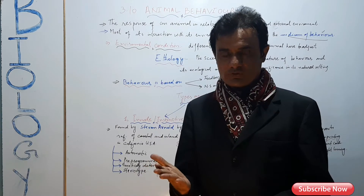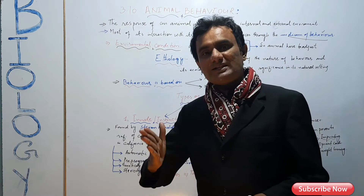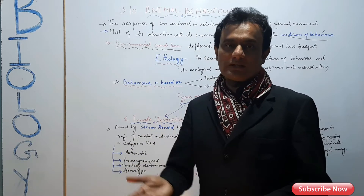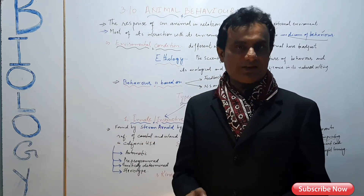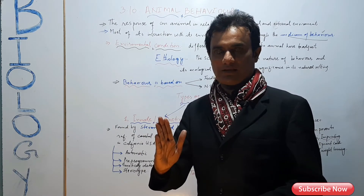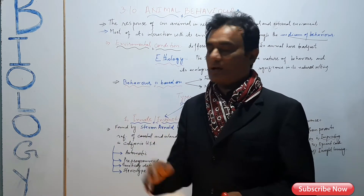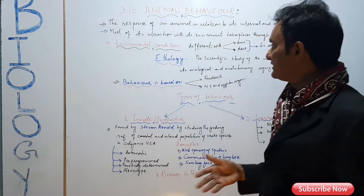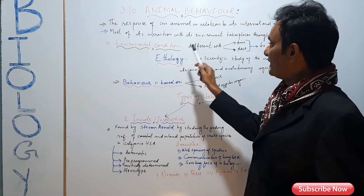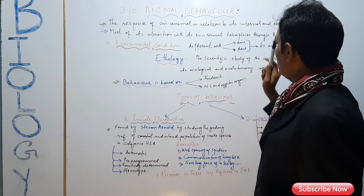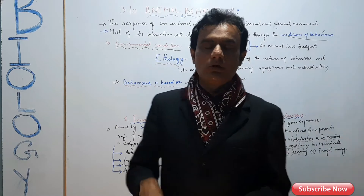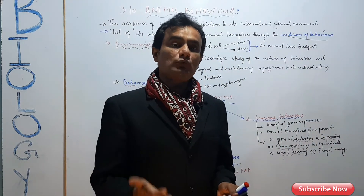Animal behavior and its interaction with the environment — when we talk about environment, it means the surrounding — each and everything around is called environment. Environment is not the same everywhere; it changes with time and place. Environmental conditions vary with time, so the animal must adjust.